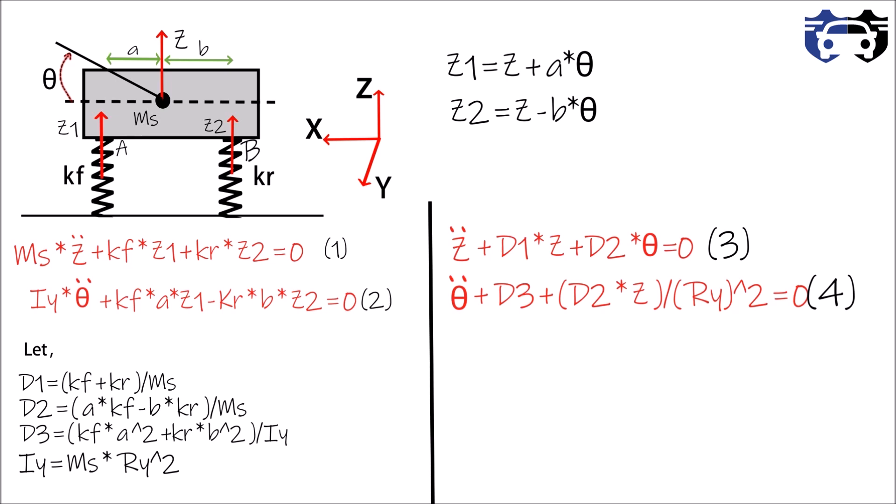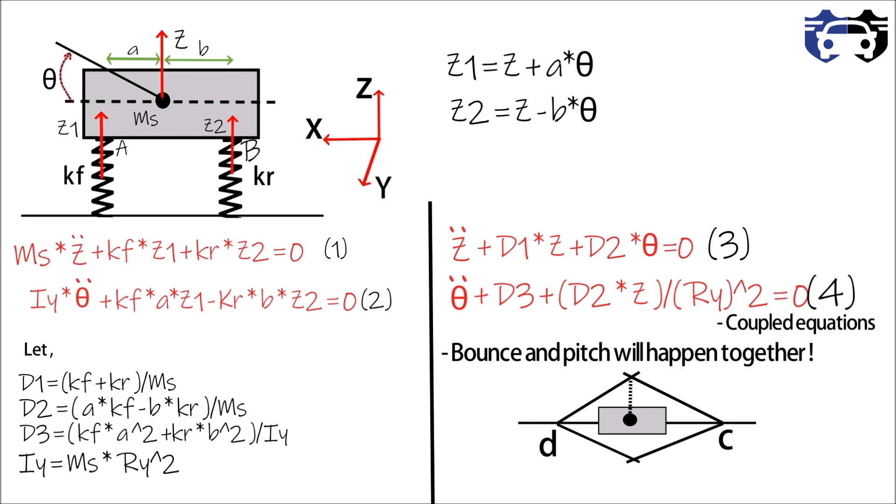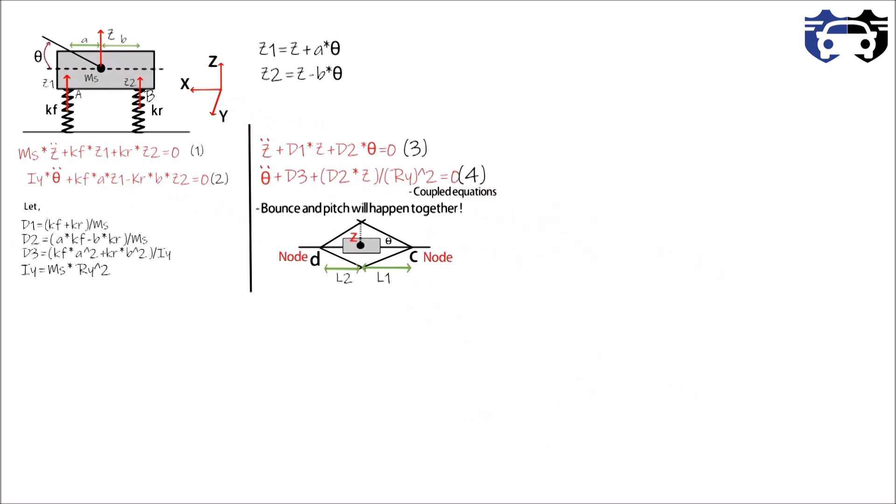Here the block is representing the car. Now if the car is pitching and bouncing together, then it will rotate about some point c and d. It will bounce something like this with bounce z and pitch angle theta. Now you can see that the car is bouncing and pitching about c and d, and these points are behaving as nodes. That is, they are free from vibration, and these are the position of the seats. Let L1 and L2 are the position of seat.